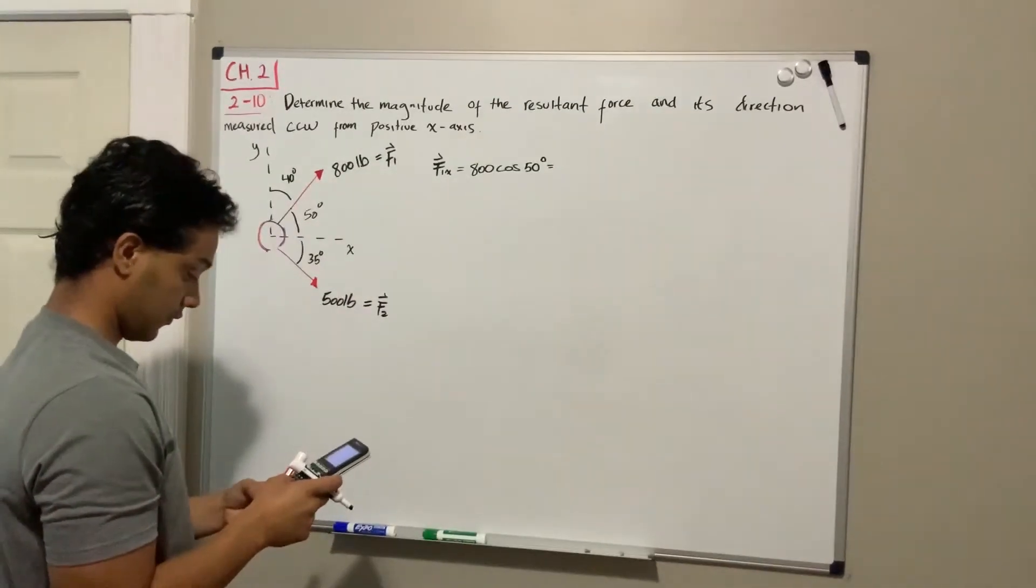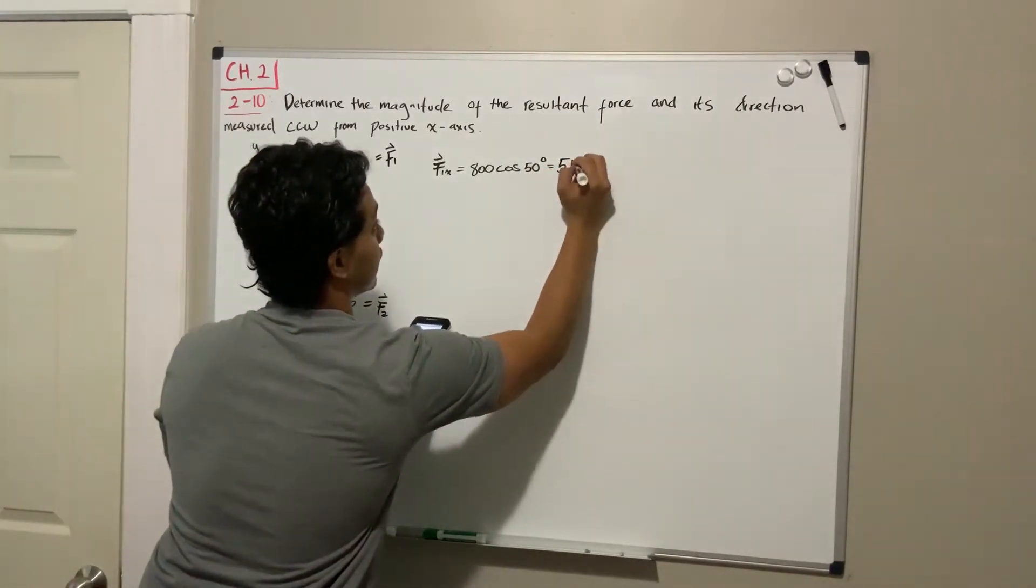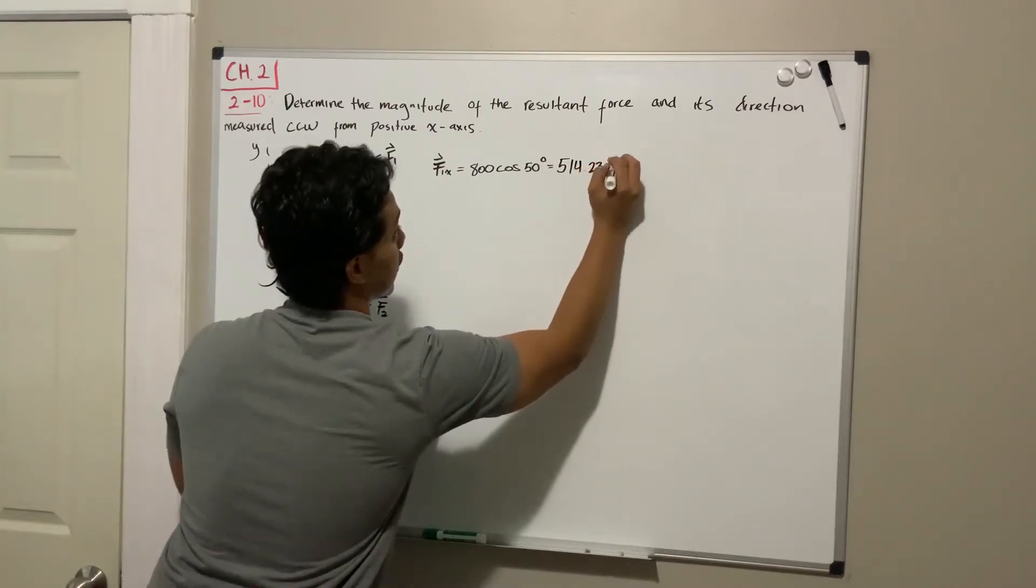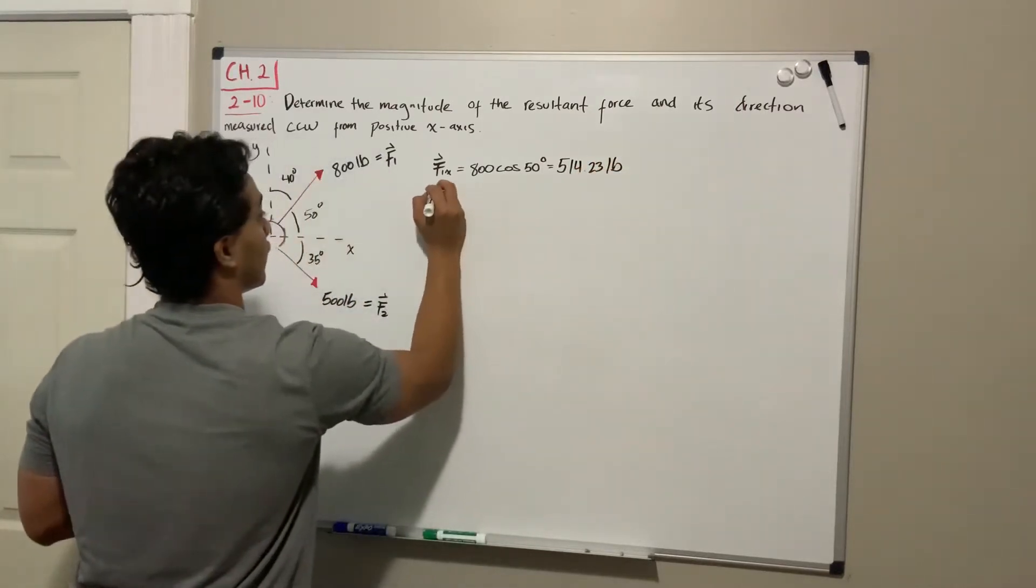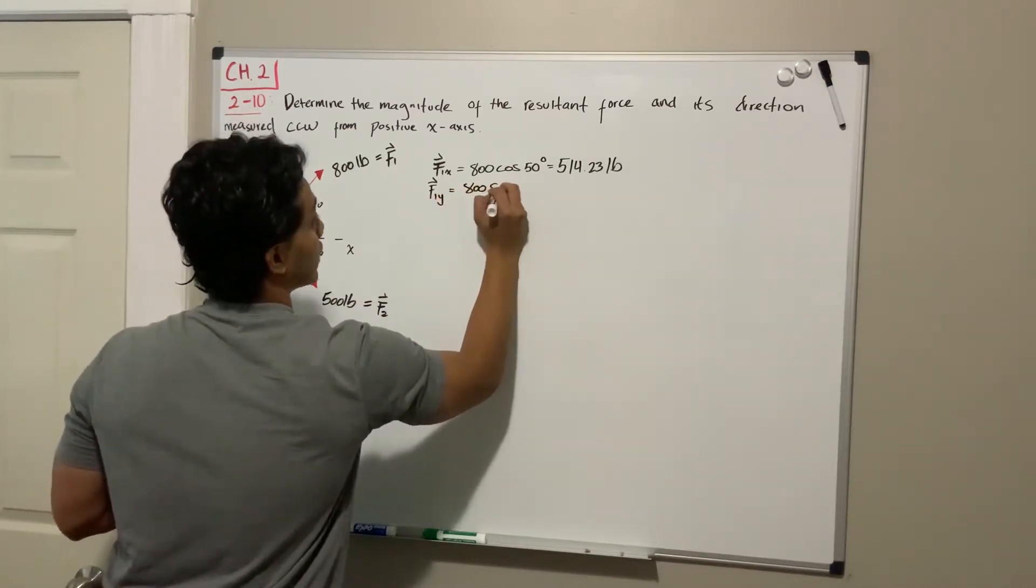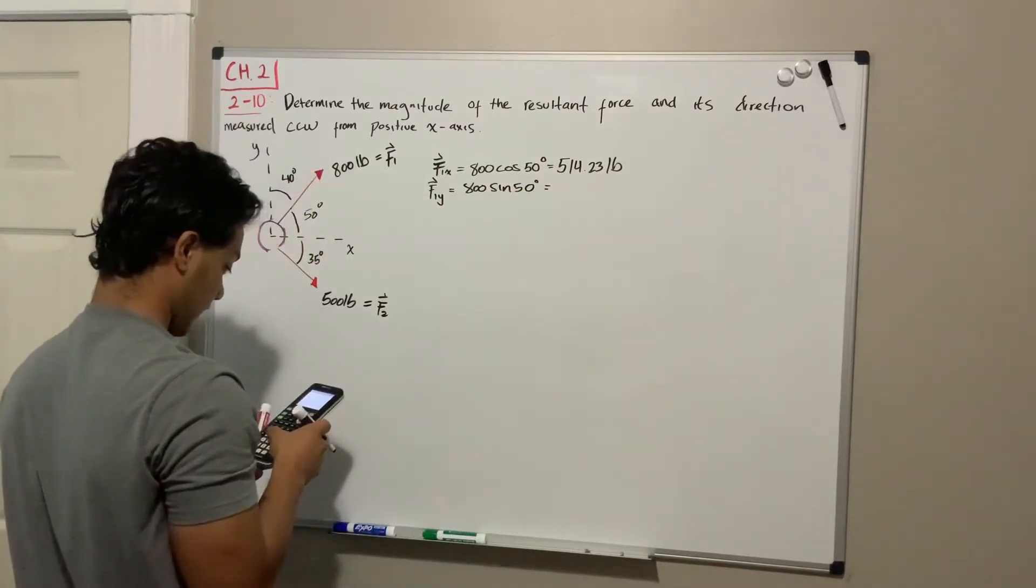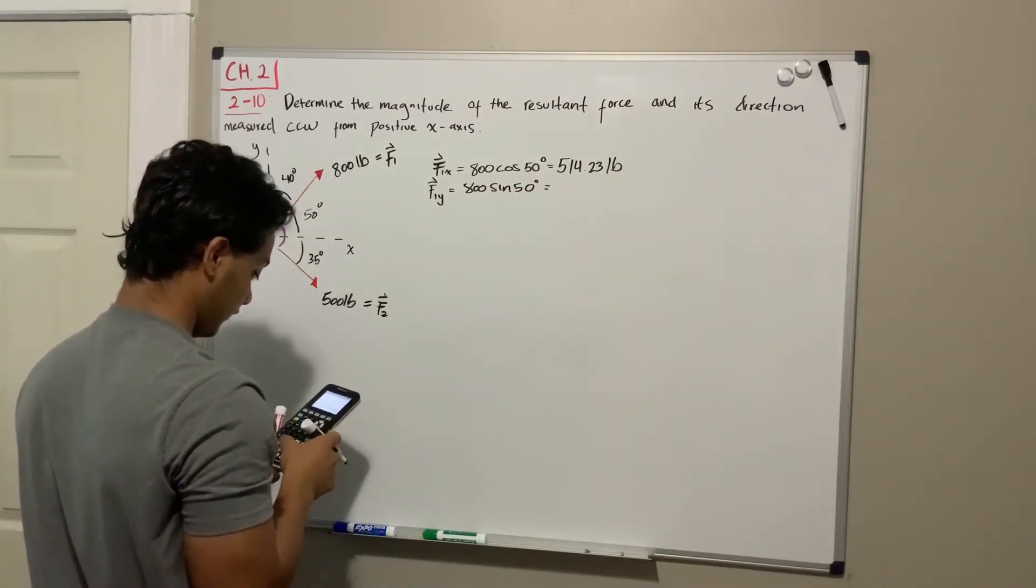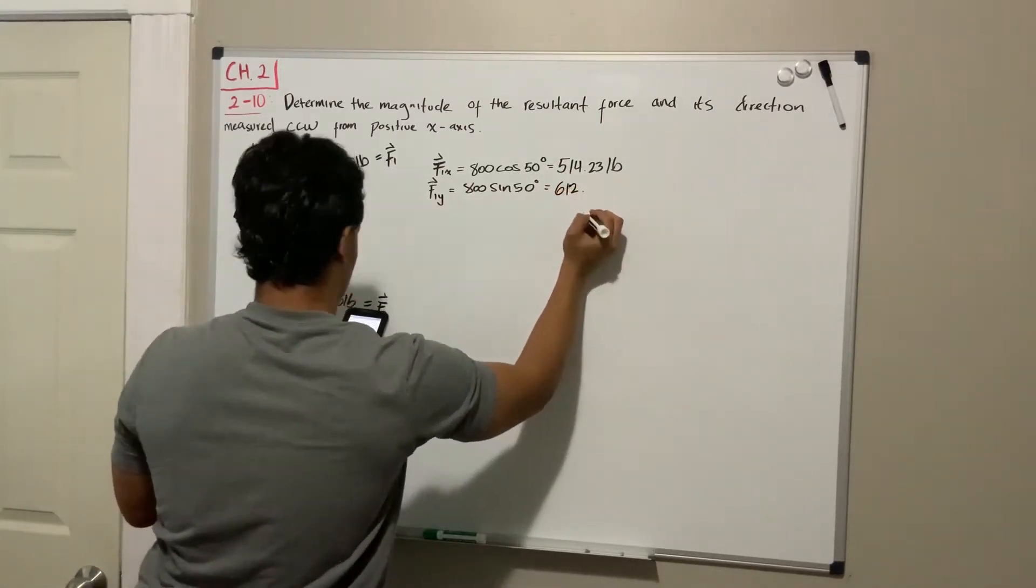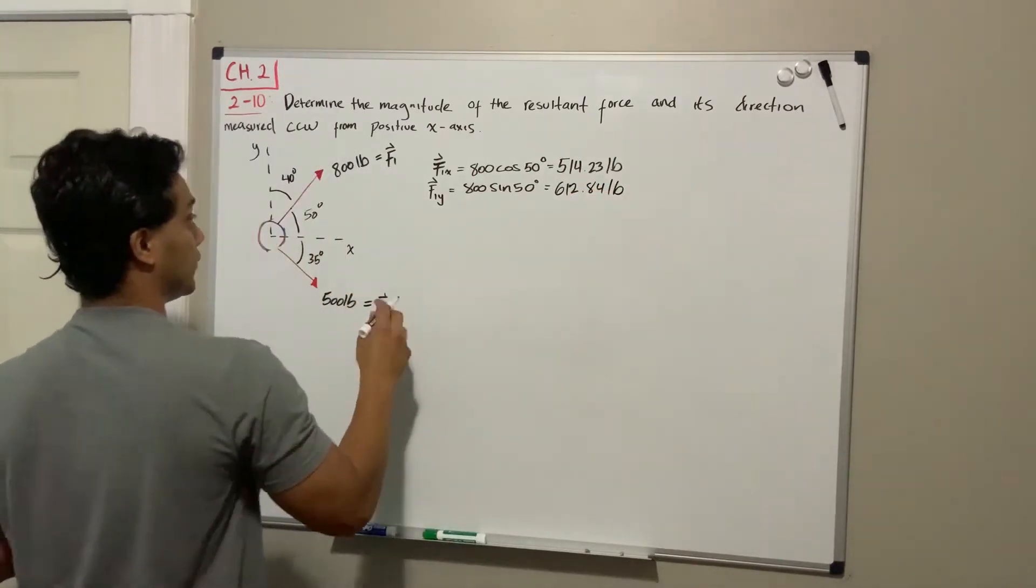For F1 in the y direction, it's going to be 800 sine of 50, and that will give us 612.84 pounds. Okay, we're done with F1.